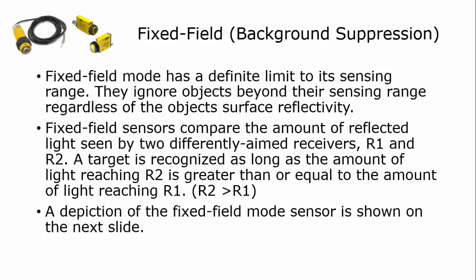Then there's a fixed field background suppression type sensor. These have a definite limit to their sensing range. They will ignore objects beyond their sensing range regardless of the reflectivity of that object.